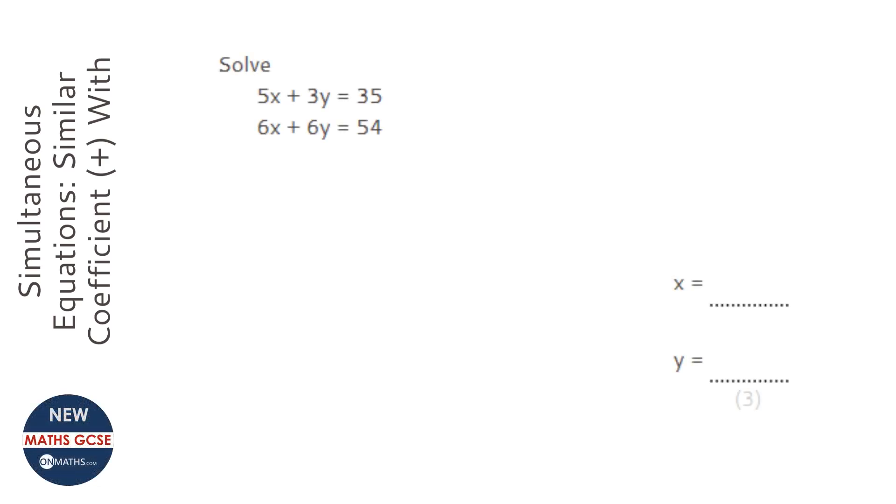We're asked to solve this simultaneous equation, but at the moment we don't have any of the coefficients the same. We've got x being 5 before it and then 6 before it, and y has a 3 before it and a 6 before it. So we need to do something about that first.